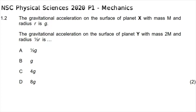Question 1.2 of multiple choice reads: the gravitational acceleration on the surface of planet X with mass m and radius r is g. The gravitational acceleration on the surface of planet Y with mass 2m and radius one-half r is... The gravitational acceleration is given by g equals the universal gravitation constant multiplied by the mass of the planet divided by the radius squared.